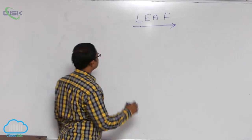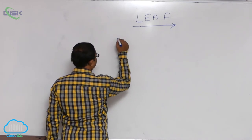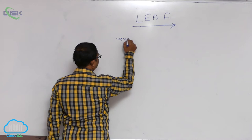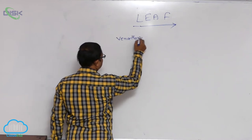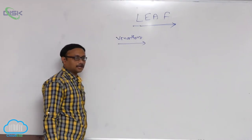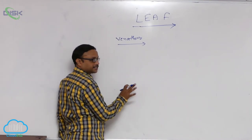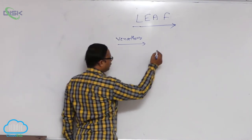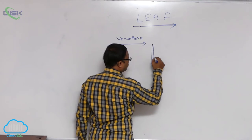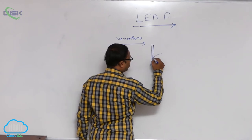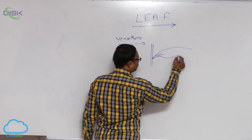Now we start the next topic: venation. So what is the meaning of venation? For example, it is a leaf — I also explained to you before — so it is a leaf.